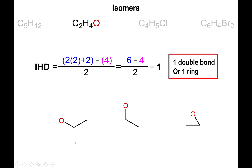First, introduce a double bond between the two carbons. This accounts for the IHD, but oxygen still only has one bond, so you'll need to add a hydrogen to it. Second, instead of a C=C double bond, place the double bond between the oxygen and a carbon — this gives a different molecule. After these two options, there's no other place to put a double bond.